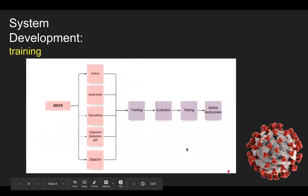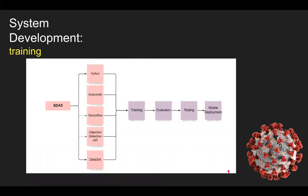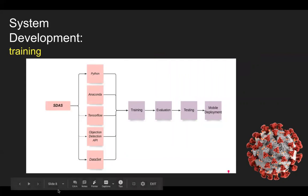We developed our application using various stages. We used Python, TensorFlow as a machine learning framework, the object detection API, and different datasets. On the dataset, we performed training, and post-training, we conducted evaluation to see whether the results met our expectations. Post evaluation, we performed testing as well as validation on seen and unseen data, followed by mobile deployment. In our case, we completed an Android deployment.